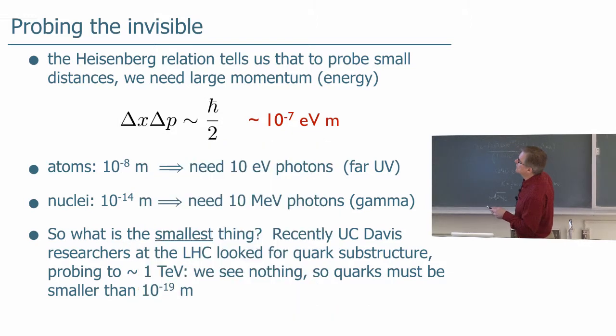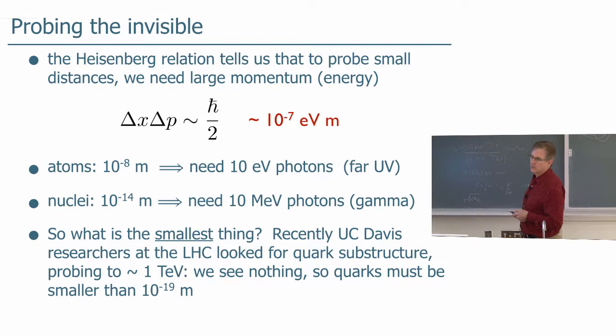Suppose you want to see a nucleus. What sort of probe do you need? Well to see that, you need, according to the Heisenberg uncertainty principle, 10 million electron volt photons, which are gamma rays. And you know, not so easy to come by, photons with such high energy. So probing nuclei takes much higher energy particles.